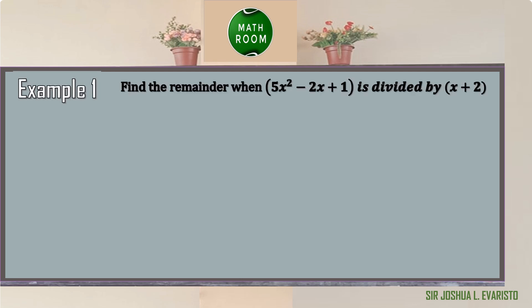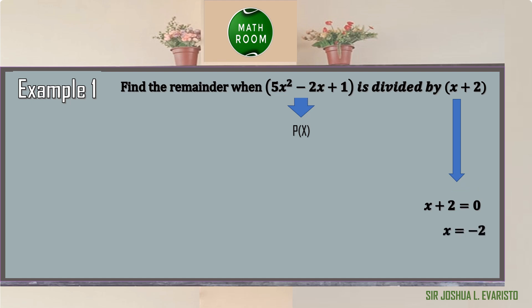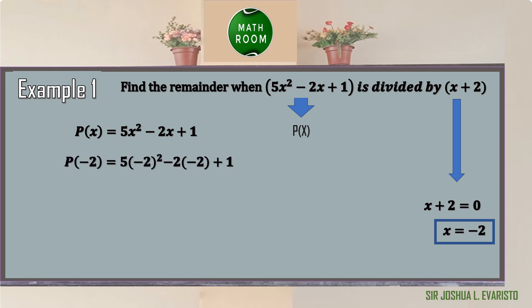Let's have an example. Find the remainder when 5x squared minus 2x plus 1 is divided by x plus 2. First, we need to identify our p of x — that is our dividend — and the divisor should be in the form x minus r. We need to find the value of x in the divisor by equating our divisor to 0, then transpose 2, so x is equal to negative 2. We can now write our p of x and substitute the value of x, which is negative 2. The resulting equation is p of negative 2 is equal to 5 times negative 2 squared minus 2 times negative 2 plus 1.